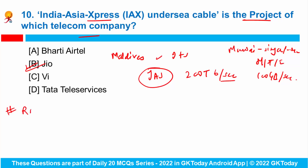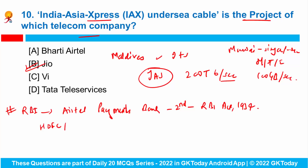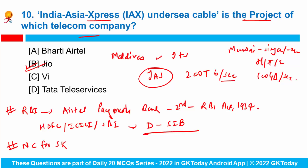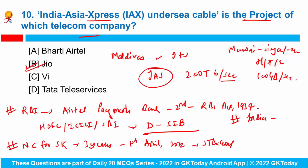RBI has recently included Airtel Payments Bank in the second schedule of the RBI Act 1934. HDFC, ICICI Bank, and SBI are to remain as domestic systemically important banks. The Union Cabinet has approved the extension of the National Commission for Safai Karamcharis for three years with effect from 1st April 2022; it is a body under the Ministry of Social Justice and Empowerment. As per Chinese government data, India's bilateral trade with China increased by 43.3% in 2021, despite India's measures to decrease dependence on Chinese imports.